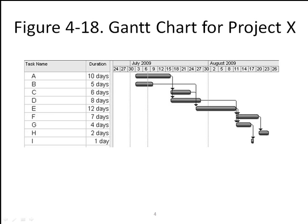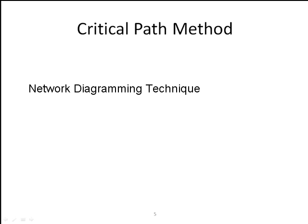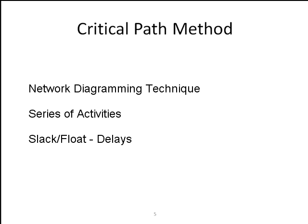However, a more powerful tool to use is called the critical path method. This critical path method is a network diagramming technique used to predict the total project duration. A critical path for a project is the series of activities that determine the earliest time by which the project can be completed. It is the longest path through the network diagram and has the least amount of slack or float.